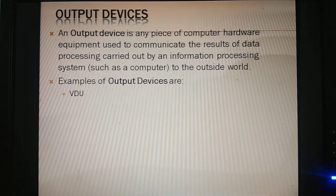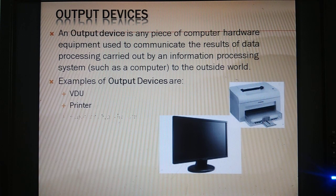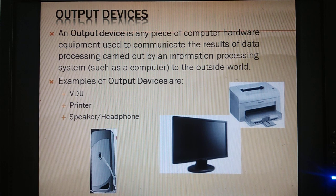Next are output devices. Output devices include devices which give us results. They give us video to the visual display unit. You can see output as a hard copy or soft copy. The monitor or LCD or video display unit visualizes output. The printer is an output device which gives a hard copy printout. The speaker, which we also call a headphone or speaker, is an output device because it provides sound.